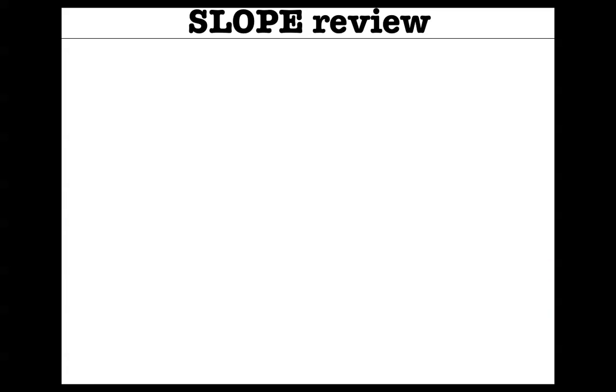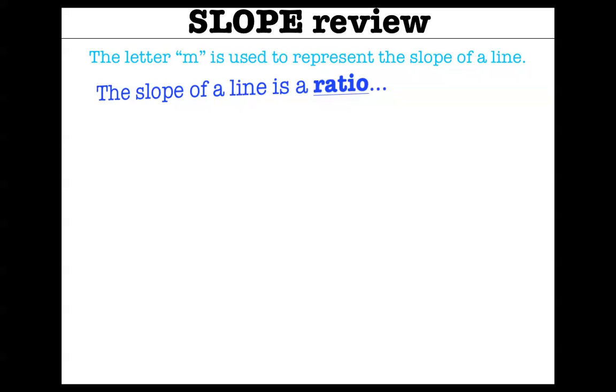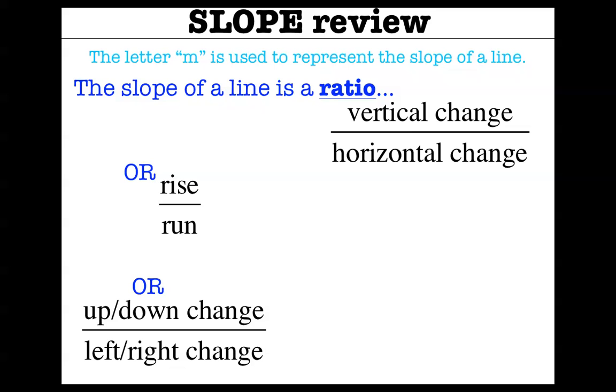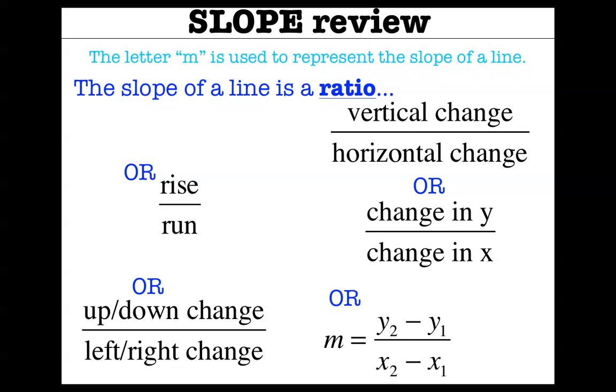Let's review the idea of slope. Hopefully at this point we should be pretty familiar with it. Remember that the letter m is used to represent the slope of the line, and we don't know why the letter m is the letter of choice, but it just is, so we go with it. We also remember that the slope of a line is a ratio. It's something over something, and that something over something is the vertical change of a line over the horizontal change of a line, or what we called the rise over the run. We also said it's like the up-down change versus the left-right change, or the change in the y value over the change in the x value. We even made a formula where we did y2 minus y1 over x2 minus x1. That's just a review, but the idea here is there's a lot of ways to find the slope of a line.